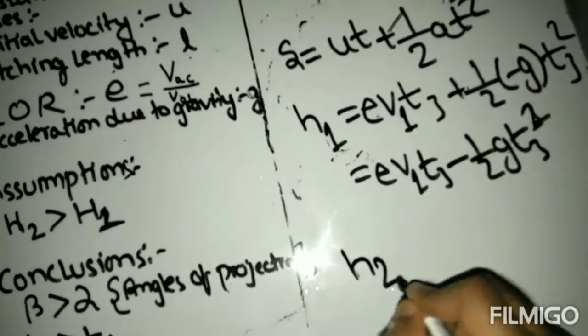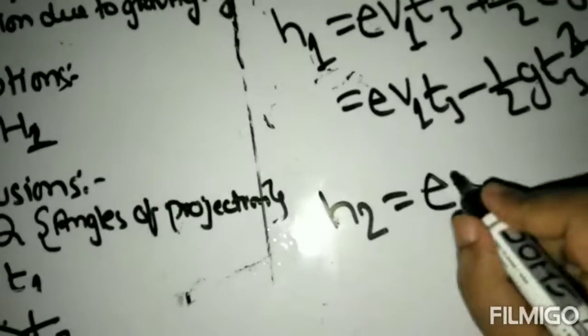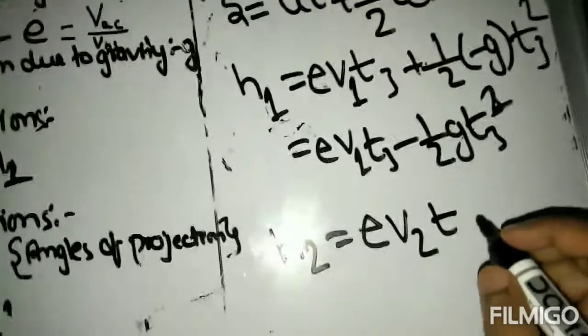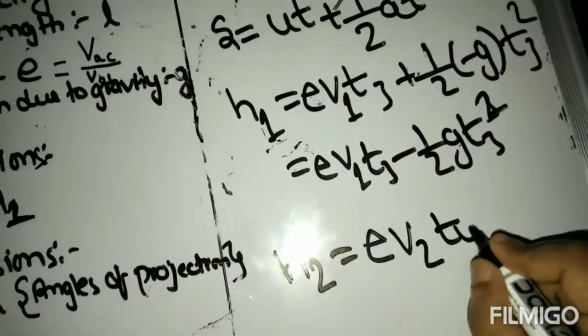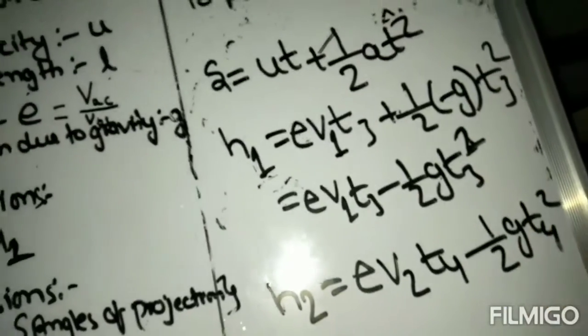Similarly, h2, which is the maximum bounce in case 2, will be ev2 t4 minus 1 by 2 g t4 square.